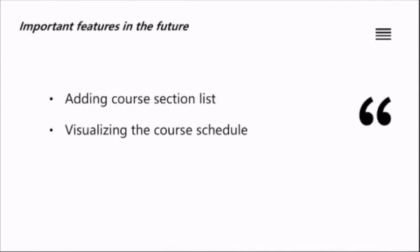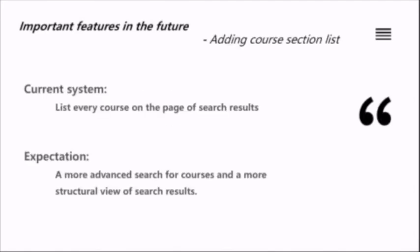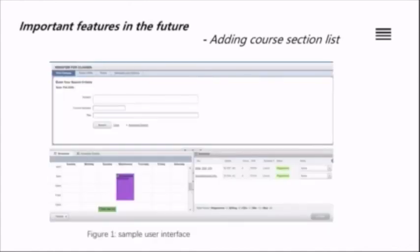The following features are what we want to implement in the future for students and teachers. The first one is adding a course section list, and the second one is visualizing the course schedule. For the course section list, our current system lists every course on the search results page. In the future, we hope to develop a more advanced course search with a more structured view of results, allowing users to search by course subject, course number, or course title.